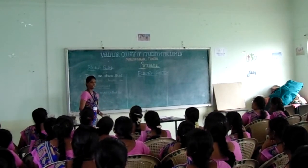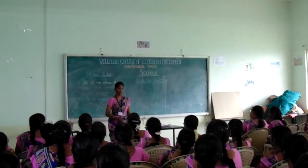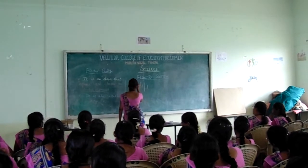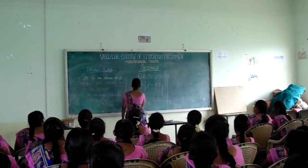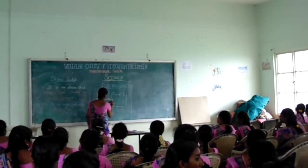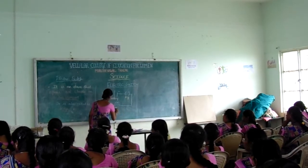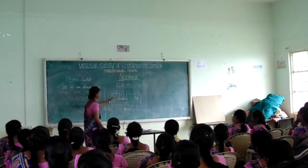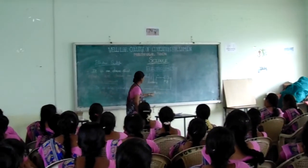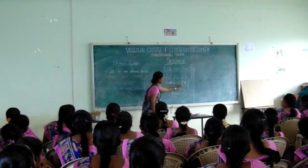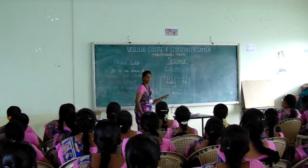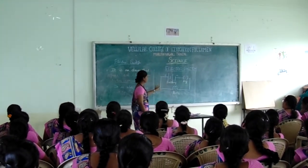Before going to electric switch, we must know about the electric circuit. This is the electric circuit. It consists of four components. First one is battery. Battery consists of positive and negative. This is the key, and this is the bulb. Battery is the source of electric current, and the key opens or closes the electric circuit. All three components are connected by conducting wires, which carry the current. So this is called an electric circuit.